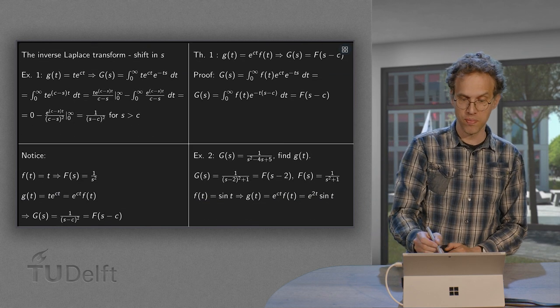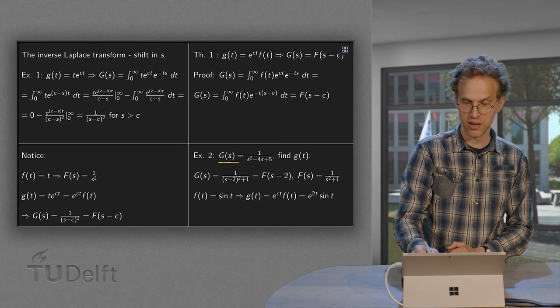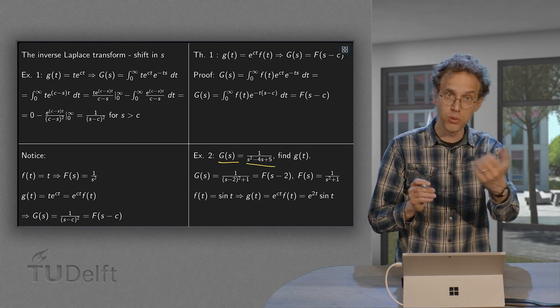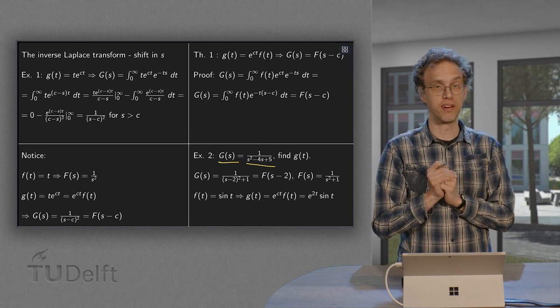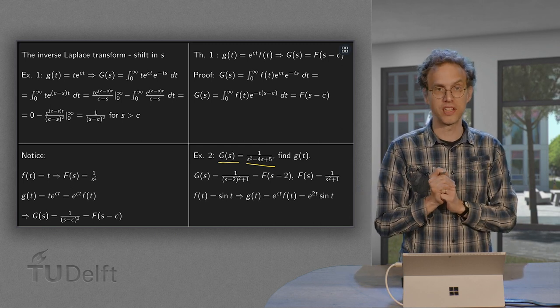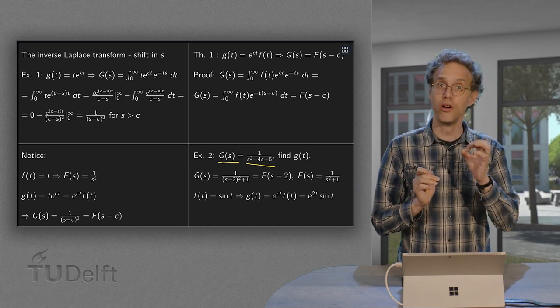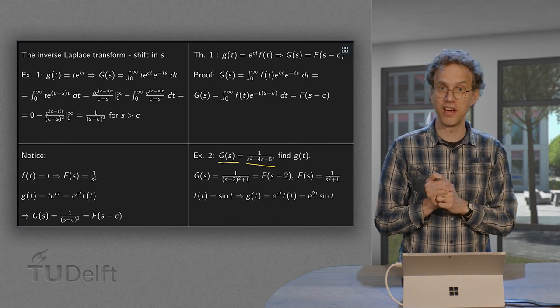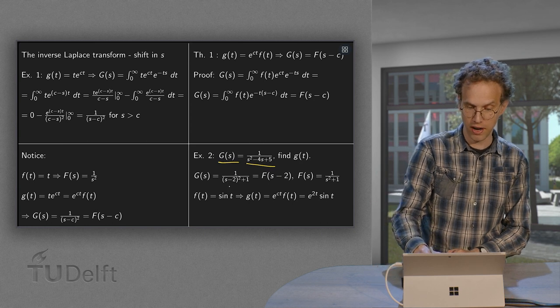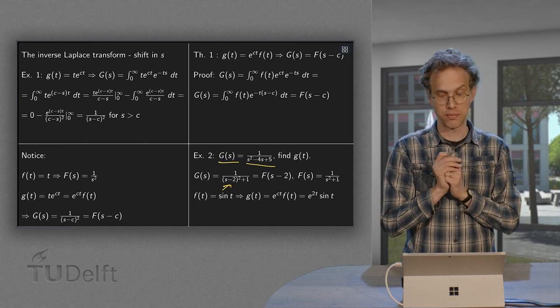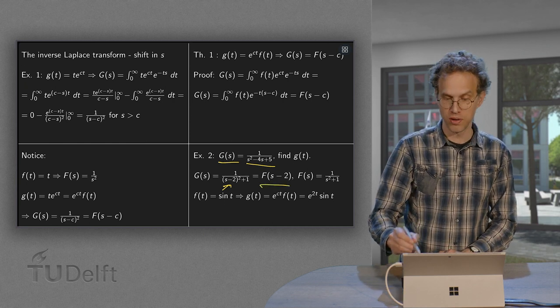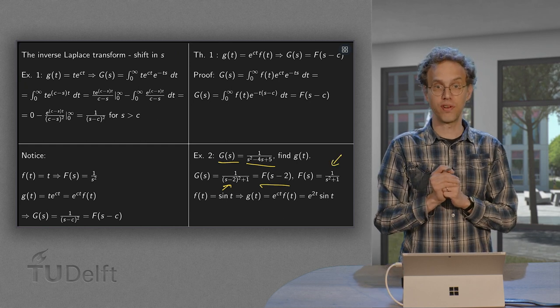For example, second example: if you have G(s) = 1/(s²-4s+5), and you want to transform back. Now, this function is not in your table. And if you do not know how to do complex integration, what to do? Fortunately, you can rewrite this G(s) as F(s-c) as follows. You can complete the square. Then you have 1/(s-2)²+1. And this is exactly F(s-2), where F(s) = 1/(s²+1).